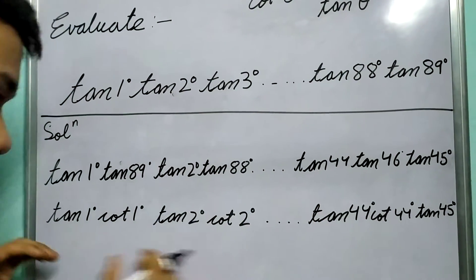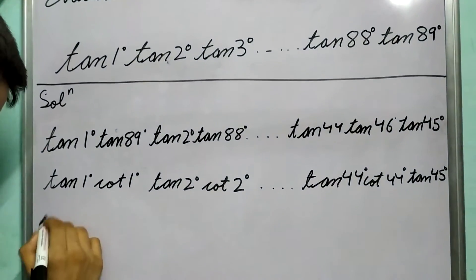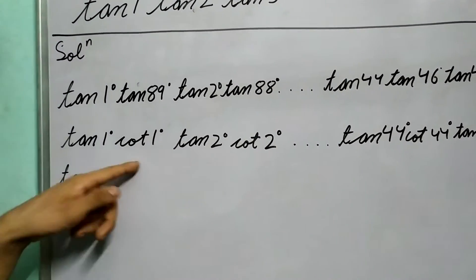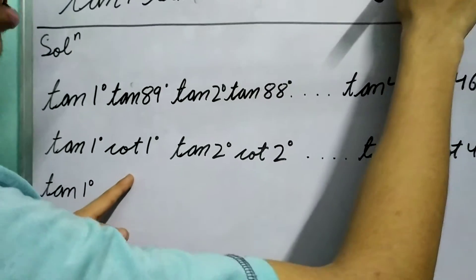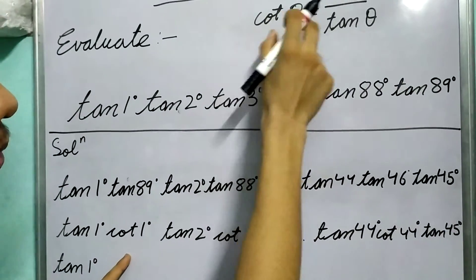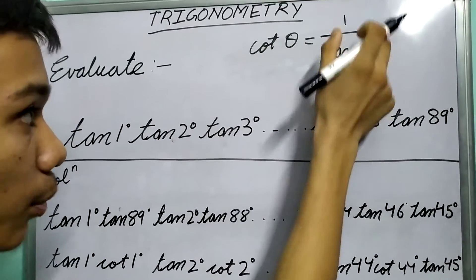And how can we use this in expansion of this expression? You see, we can write tan 1° · cot 1°, so if we write 1° instead of θ, we get cot 1° = 1/tan 1°, right?